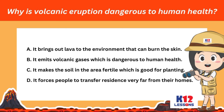Why is volcanic eruption dangerous to human health? A. It brings out lava to the environment that can burn the skin. B. It emits volcanic gases which is dangerous to human health. C. It makes the soil in the area fertile which is good for planting. D. It forces people to transfer residents very far from their homes.